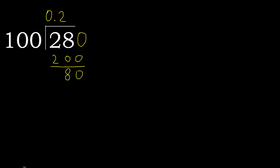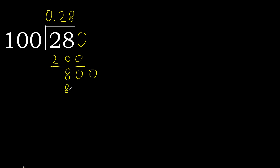There is no number, therefore complete — always complete with 0. 0 point. Point is here. 800. 100 multiplied by 8 is 800, is not greater. Subtract 0. Therefore finish: 28 divided by 100 is 0.28.